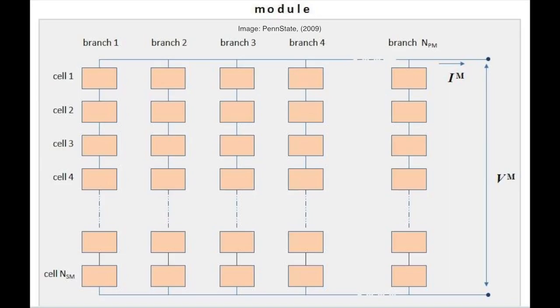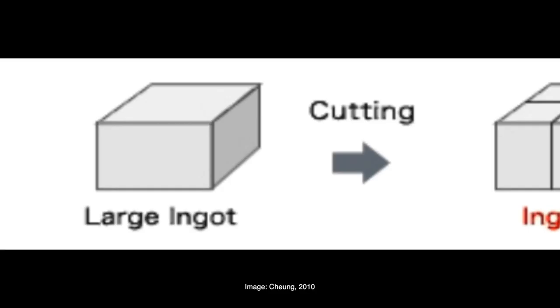To provide significant power output, solar cells are typically grouped into modules. Using the same method, modules can be grouped into arrays, which are more typical for utility-scale solar farms.